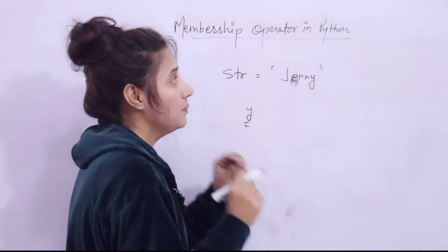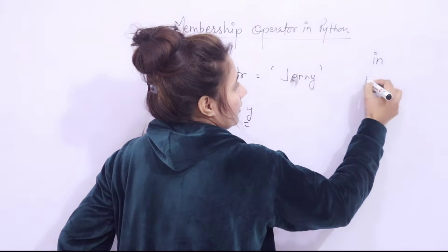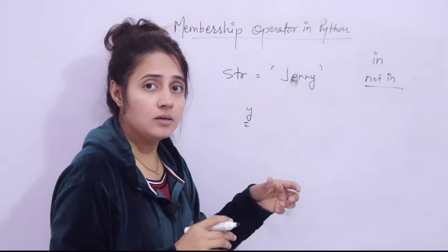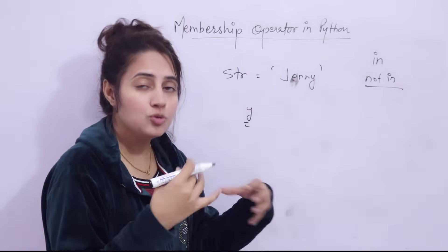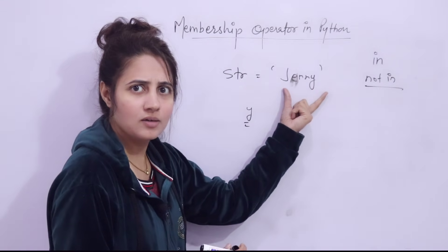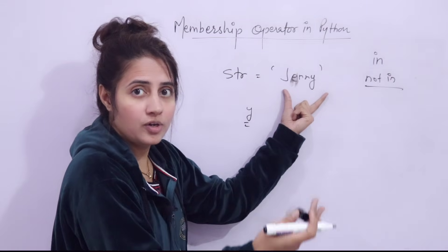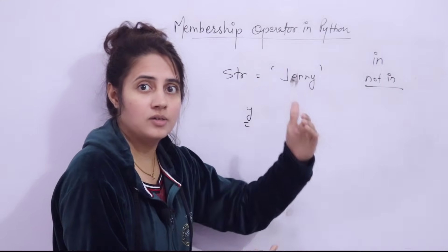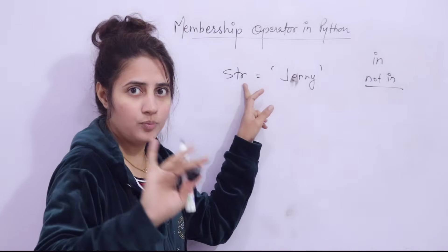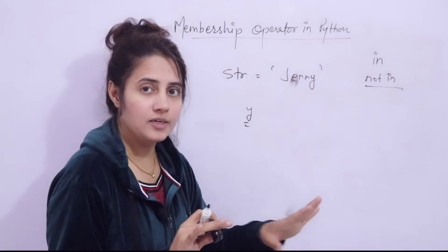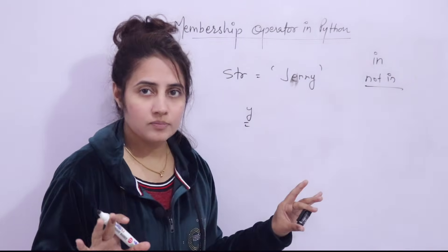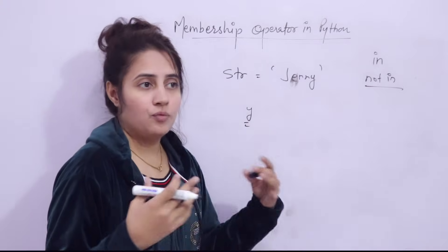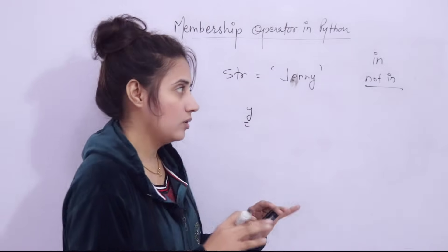This kind of checking is done using membership operators in Python. There are basically two types: 'in' and 'not in'. Membership operators are used to check whether a character, substring, value, or variable is present in a sequence. A sequence can be a string, list, tuple, dictionary, or set.